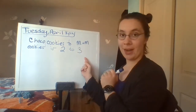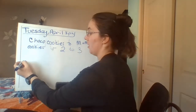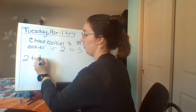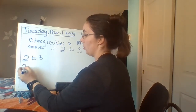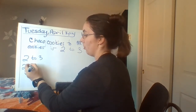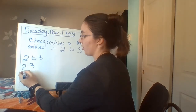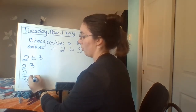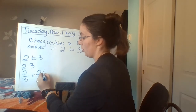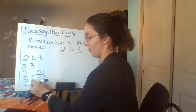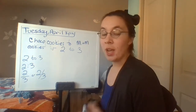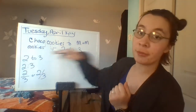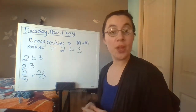We know that we can write two to three as two-three with a colon, as a fraction two over three, or as two,three as we're writing them on the computer. And what that means is that for every two chocolate chip cookies, we have three M&M cookies.